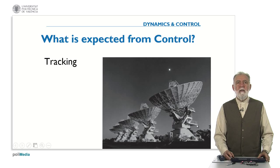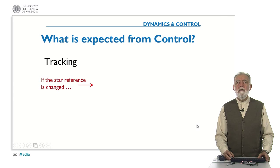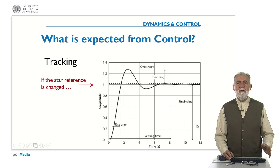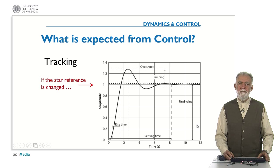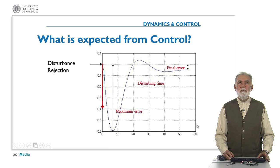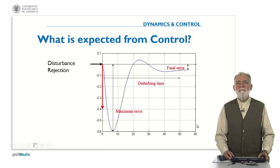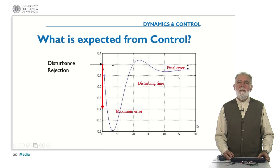Let's have a look at tracking. For instance, if we have a group of antennas following the trajectory of some star or planet in the sky, and we want to change from one star to another, we change the reference and we want our antenna to move as fast as possible without oscillations, reaching the final point without error. With disturbance rejection, if we have a plant operating steadily and some disturbance appears, we want the maximum error to be small, the disturbing time to be short, and the final error to be as small as possible.